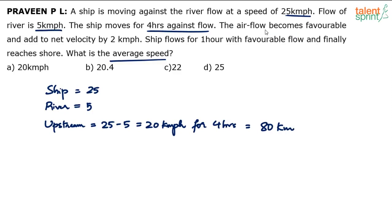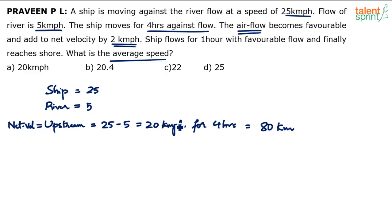The air flow becomes favorable — understand, he is not talking about the river flow. The air flow becomes favorable, so air is favoring the ship and adds to the net velocity by 2 kilometers per hour. The net velocity is the upstream speed, which is 20 kilometers per hour. But now the air flow is favoring the ship and adds 2 kilometers per hour to its speed. So what is the new net velocity?